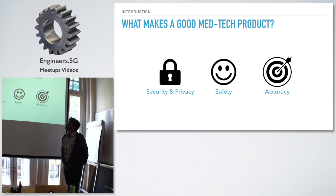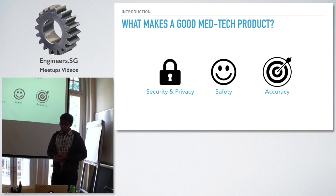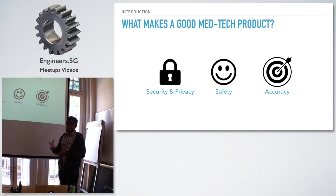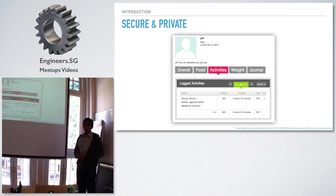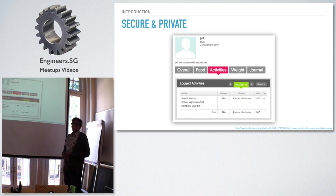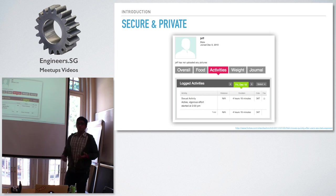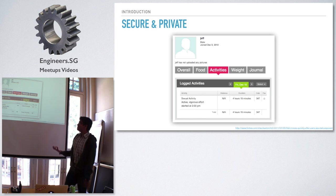What makes a good MedTech product? According to me, there are three main things to address: security and privacy, safety, and accuracy. A few years back, on Fitbit's page, all activities recorded were public by default and people did not know that. When you're trusting a device with very personal health data, you don't want everyone to know your ailments. This is an example of things to avoid as developers when building in this space.